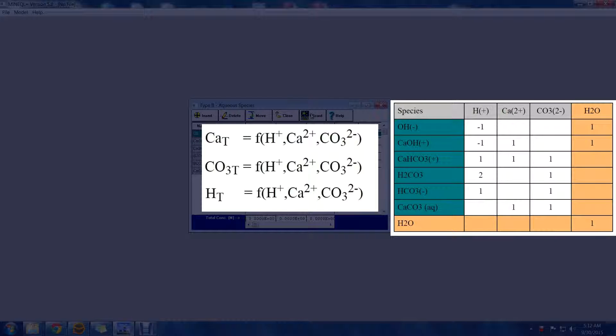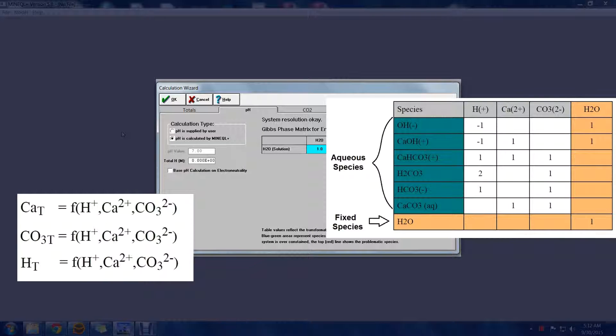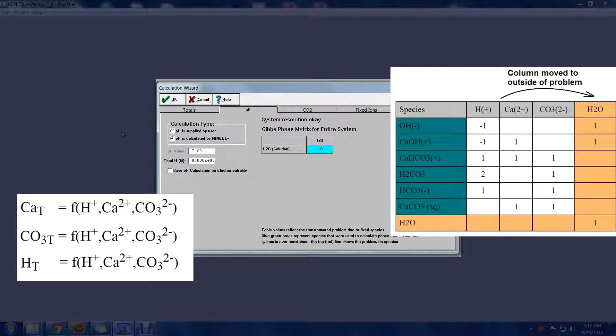We can reduce the tableau to view just the mass balance aspects. As we said earlier, water has a fixed activity of one. If we add water as a fixed species, the problem gets smaller and the tableau shows our three equations, shown here as the white columns. The yellow area shows fixed species and components that are removed from the problem.